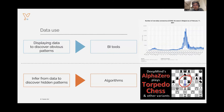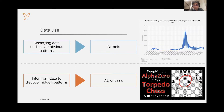When just visualizing the data would already lead to insights, you would typically use BI tools to help with this. I just wanted to show a very dreadful image — we have been bombarded by all kinds of graphs visualizing how COVID is spreading. This is a simple way of looking at data, just visualizing it. On the other hand, what's much more interesting is that you might also want to discover new and deeper patterns in data, and for this, we use mathematical models or algorithms.